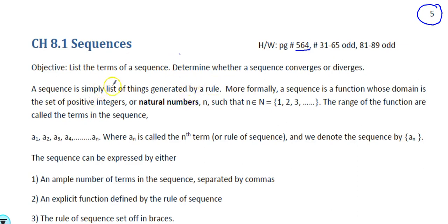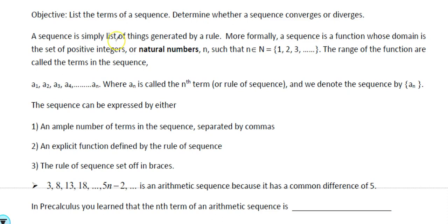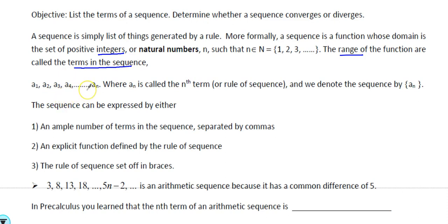Before this, make sure you have watched my previous video about the introduction to sequences, series, and the importance of series in calculus. As a brief review: a sequence is a list of things generated by a rule. More formally, a sequence is a function whose domain is the positive integers, so n is always an integer — the counter n is always going to be an integer. The range of the function are called the terms of the sequence.